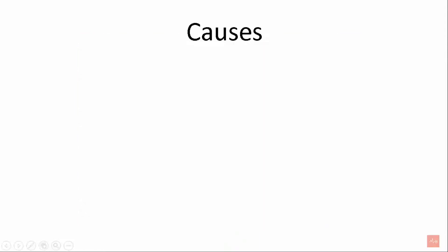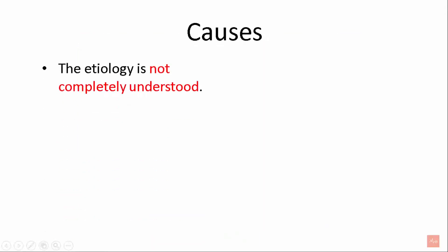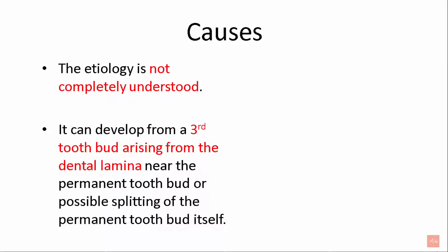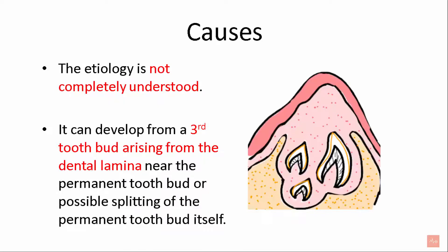Let's see what the causes are. The etiology is not completely understood. However, some believe that it is formed by the third tooth bud arising from the dental lamina near the permanent tooth bud, or the possible splitting of the permanent tooth bud itself.